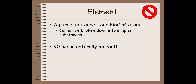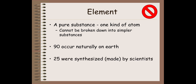The first 90 of the elements occur naturally on Earth. Then 25 of these were synthesized — made by scientists in the lab. You make these in something like the Large Hadron Collider, which is a place where these elements can be synthesized.